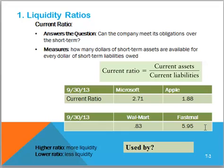Who uses these ratios? A very important set of users is vendors. Vendors will look at the financial statements of a company to see if they believe the company will be able to pay them on time if they give the company credit. This is one of the most commonly used ratios.